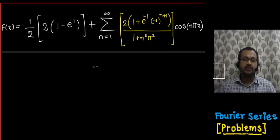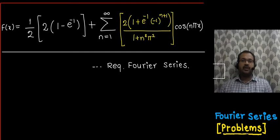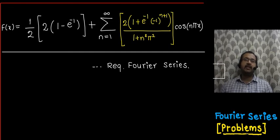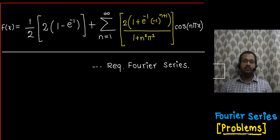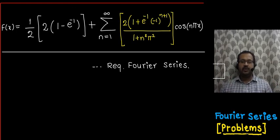This is the required Fourier series. Note that if we had not checked for even or odd properties and treated f(x) as neither even nor odd, we would need to calculate bₙ as well, which would ultimately turn out to be 0 but would take much more time. So when the range is minus 1 to 1, it is better to first consider the even and odd properties of the given function.